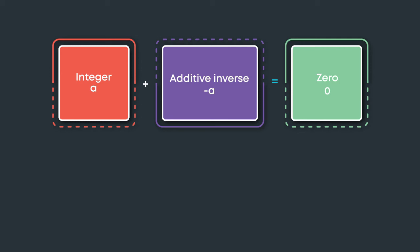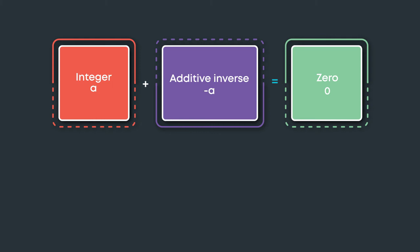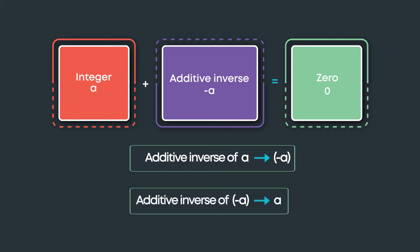Now let us understand the additive inverse of an integer. The additive inverse of an integer a is the number that, when added to a, gives zero. This number is also called the negative of the integer. The additive inverse of a is minus a, and the additive inverse of minus a is a. The opposite of a positive number is the negative of the number, and the opposite of a negative number is the positive of that number.